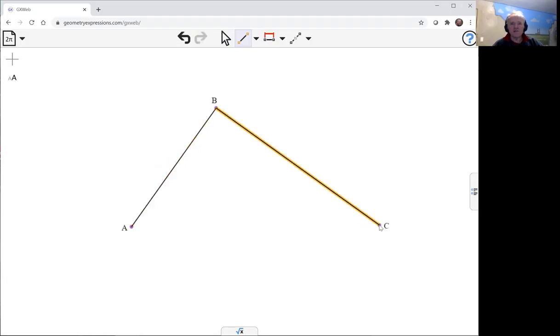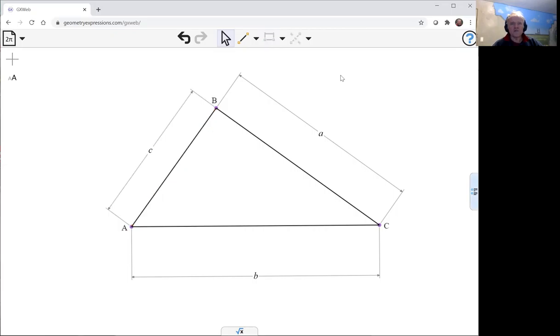So here's my triangle and let me do my usual gambit of constraining the side lengths of my triangle. This will give the appropriate input for GXweb to play with.